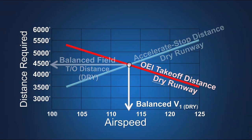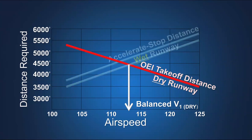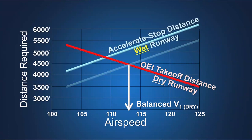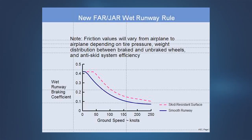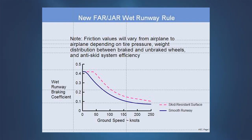When the runway is wet, the accelerate stop distance increases due to reduced friction during braking. The braking friction on a wet runway varies greatly with speed, while it is essentially constant with speed on a dry runway. At faster speeds, the wet runway braking friction is much lower than at slower speeds.